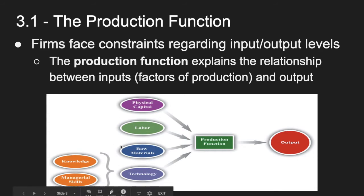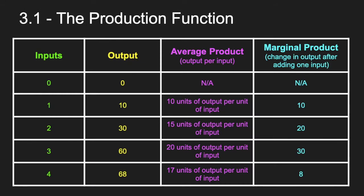All of these things cost money, and we're going to get to that in 3.2. What we're looking at in 3.1 is this relationship between input, output, average product, and marginal product. If you think of output as the total product — the total number of units that we're producing given a certain number of inputs — average product is just the average of output per unit of input. Marginal product is just the change in output after adding one input.